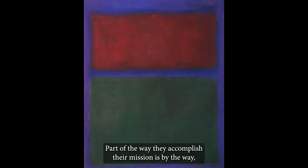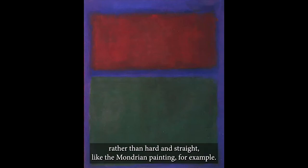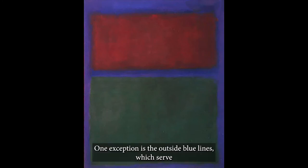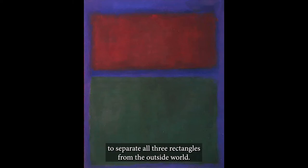Part of the way they accomplish their mission is by the way their lines, or edges, are soft and irregular, rather than hard and straight, like the Mondrian painting, for example. Straight lines isolate or separate. Soft blurry lines merge and join. One exception is the outside blue lines, which serve to separate all three rectangles from the outside world.